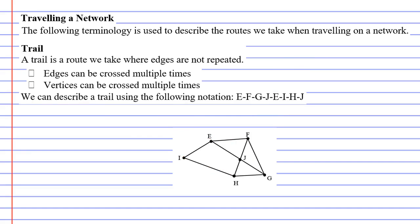Moving on to our next route, this one's called a trail. A trail is a route we take where edges are not repeated. So we'll cross off the point that says edges can be crossed multiple times because this time they can't be. However, vertices can be crossed multiple times, so we'll give that one a tick. The trail that we're going to take starts at vertex E and finishes at vertex J.